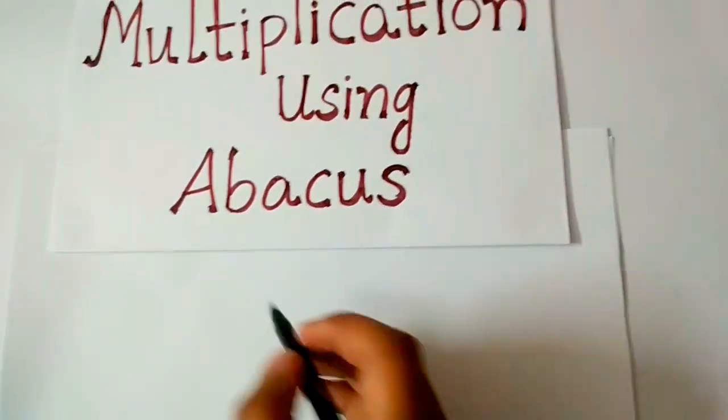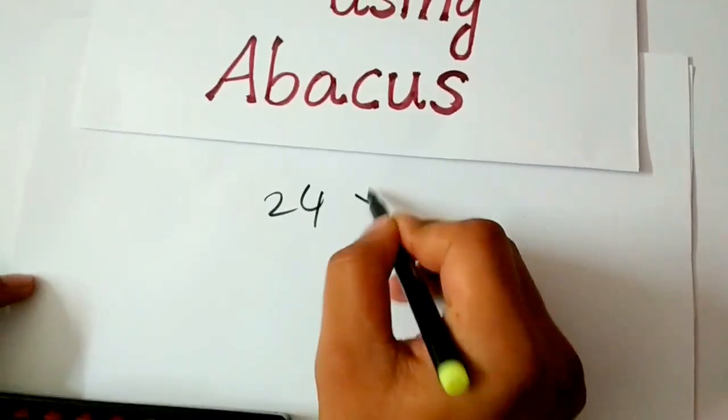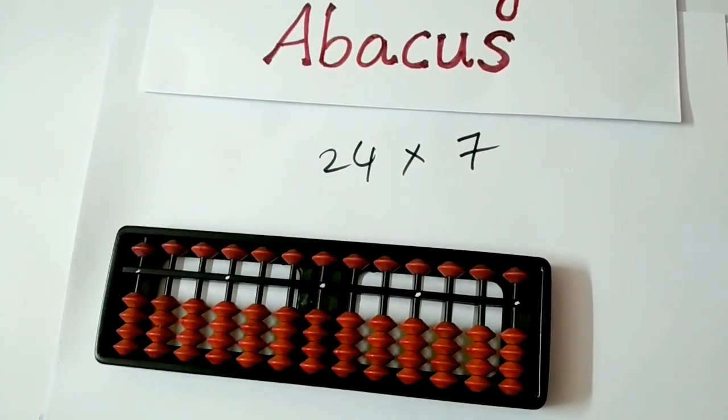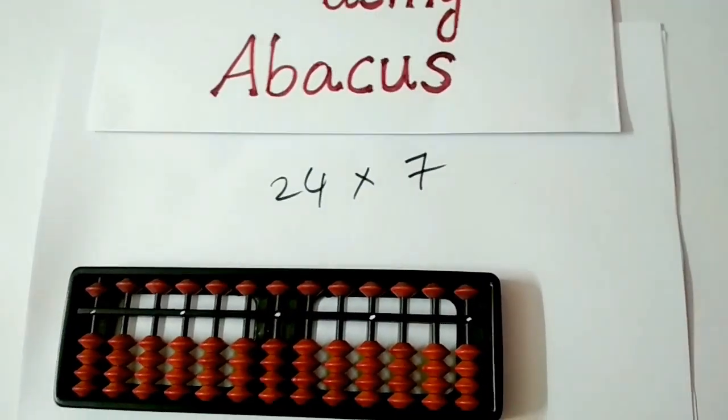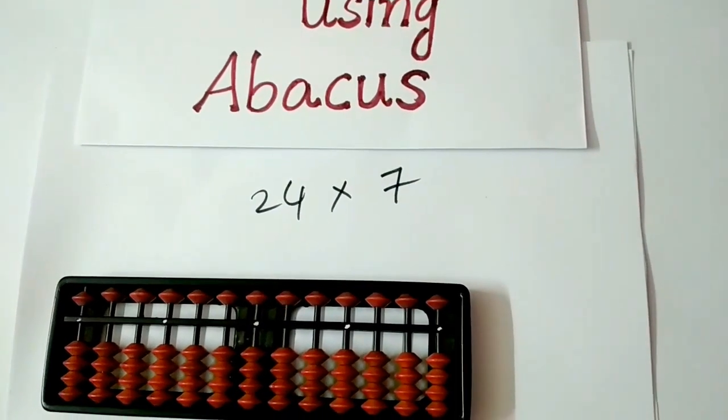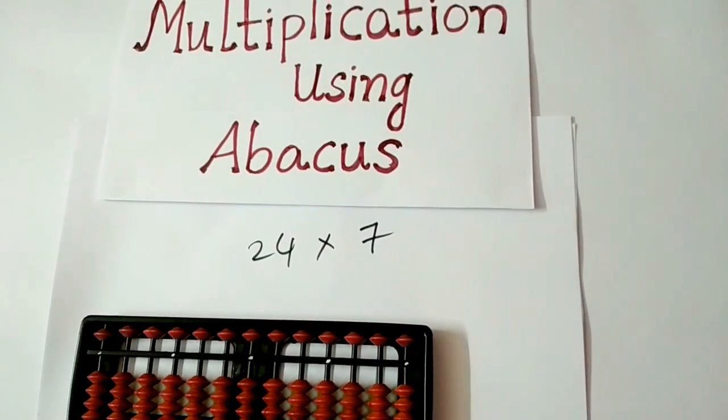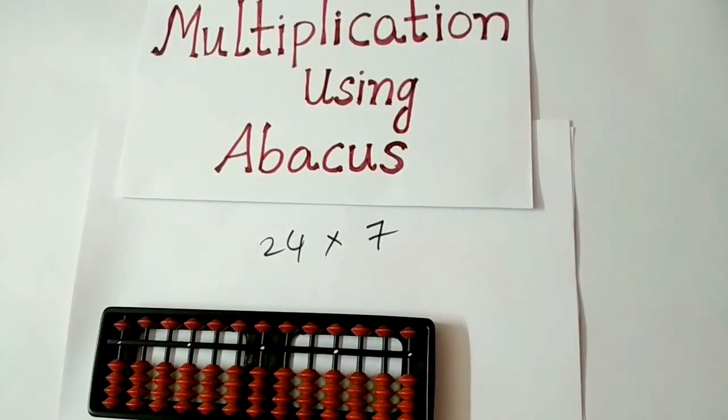Take this problem: 24 multiplied with 7. Multiplication using abacus is very easy. Two rules have to be followed while multiplying. When a 2 digit number is multiplied with a single digit number, we get a 3 digit answer.